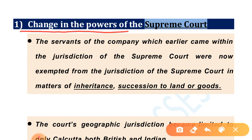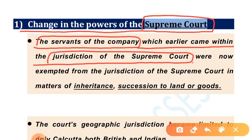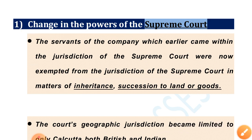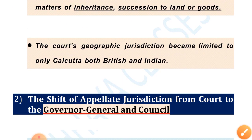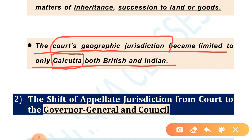First: change in the powers of the Supreme Court. The servants of the Company, which earlier came within the jurisdiction of the Supreme Court, were now exempted from its jurisdiction in matters of inheritance, succession, and land or goods. Under the Regulating Act, servants came under the Supreme Court's jurisdiction, but through this Act they were excluded. Additionally, the Court's geographic jurisdiction became limited to only Calcutta, covering both British and Indian residents.